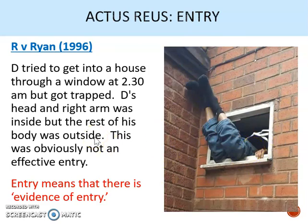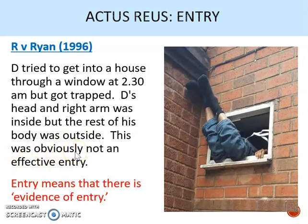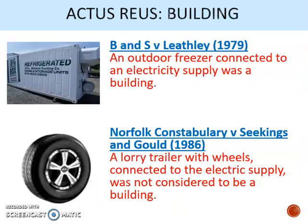In Ryan, the defendant tried to get into a house through a window at 2:30 in the morning, but rather embarrassingly he got stuck. His head and right arm were inside the building, but the rest of his body was outside. Clearly this wasn't an effective entry because he was stuck. So the case of Ryan tweaked the law on entry: entry of a building now just means that there is evidence of entry. As long as part of him was in the building, there was an entry for burglary.